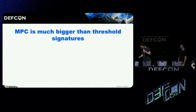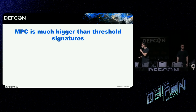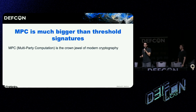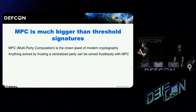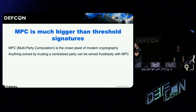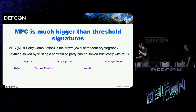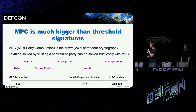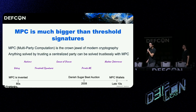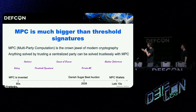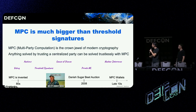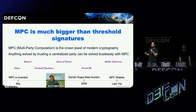MPC is much bigger than the use case I just described, which is threshold signatures. It is the crown jewel of modern cryptography. Basically, anything you can do with a trusted centralized party, you can do trustlessly with MPC. Commercial adoption has been a bit slow — MPC has been around since the eighties, and the most significant use case before blockchain was the famous Danish sugar beet auction of 2008. Since the advent of blockchain, MPC is now protecting billions of dollars in cryptocurrency wallets.